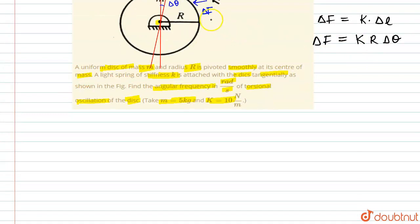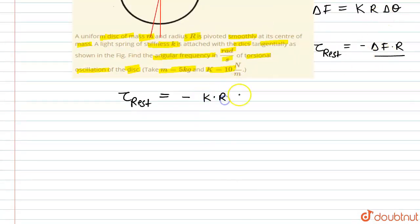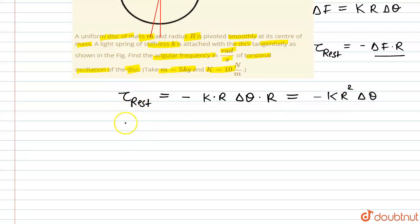This force is the restoring force about the center of the disk. So the restoring torque is minus delta f times r. Substituting delta f = k·r·delta theta, the restoring torque equals minus k·r²·delta theta. Therefore I·alpha = minus k·r²·delta theta, where I is the moment of inertia about the center of the disk.